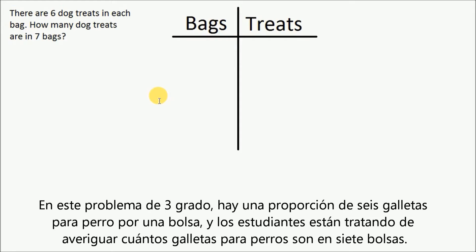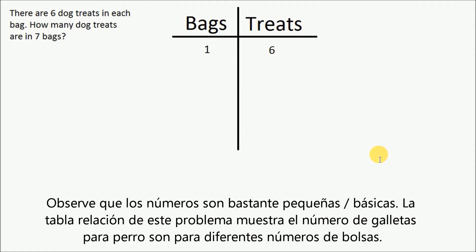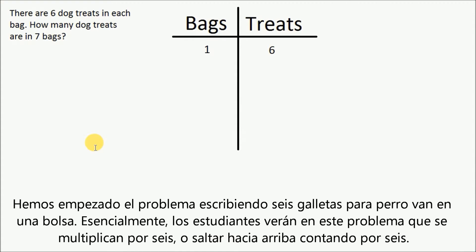In this third grade problem, there is a ratio of six treats per one bag, and students are trying to find out how many dog treats are in seven bags. Notice that the numbers are fairly small and basic. The ratio table for this problem shows the number of treats for different numbers of bags. We've begun the problem by writing six treats go into one bag. Essentially, students will see in this problem that they are multiplying by six, or skip counting upwards by six.